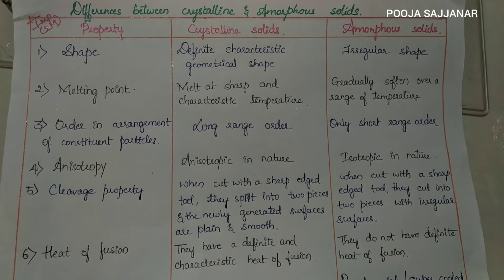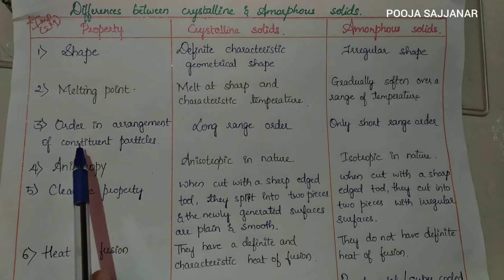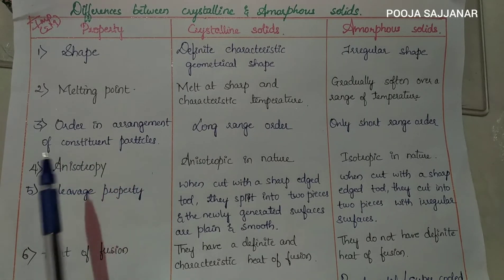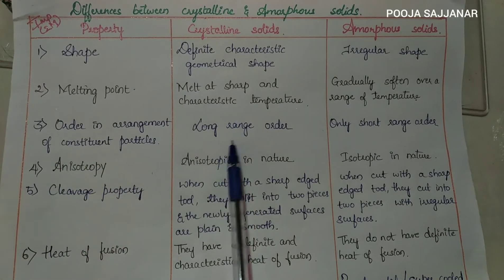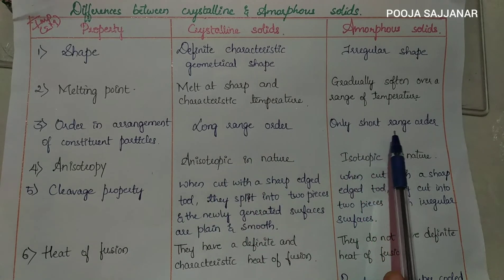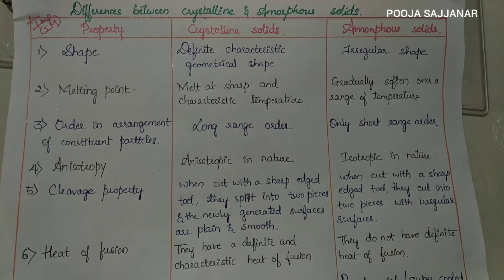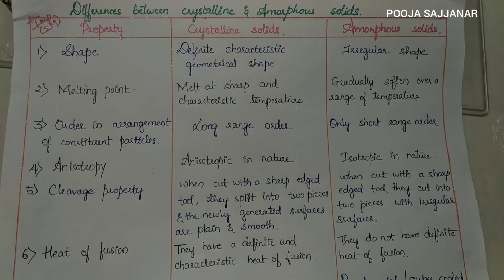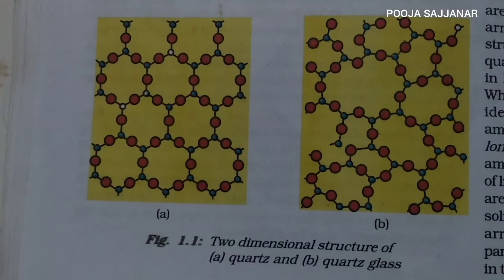The third property is the order in arrangement of constituent particles. Crystalline solids have a long range order, and amorphous solids have only a short range order. Long range order means there is a regular pattern of arrangement of particles which repeats itself over the entire crystal — throughout the structure they have the same type of arrangement.